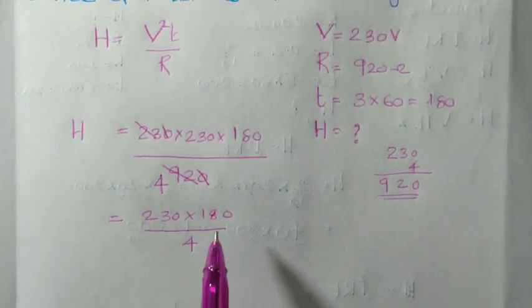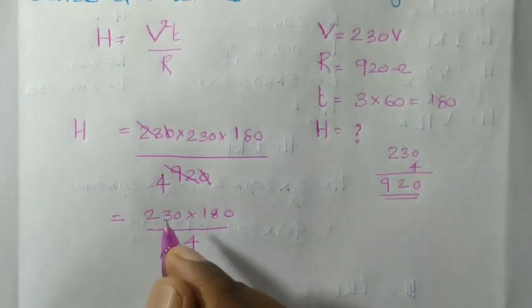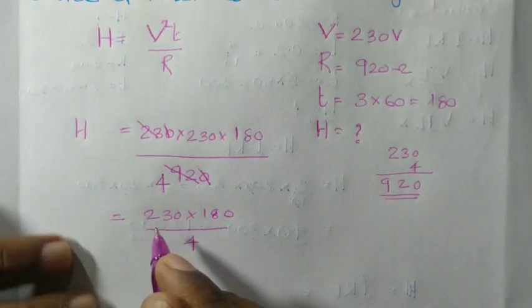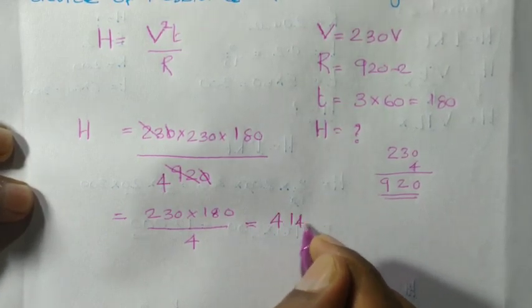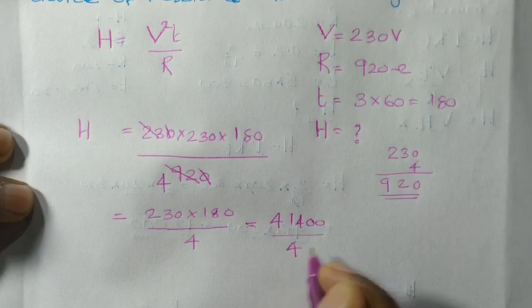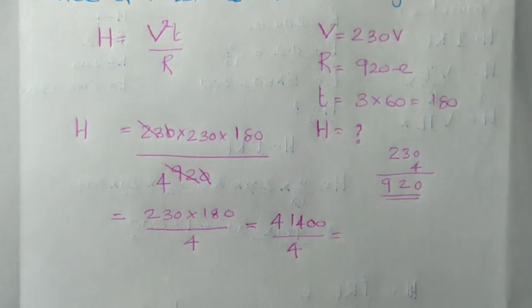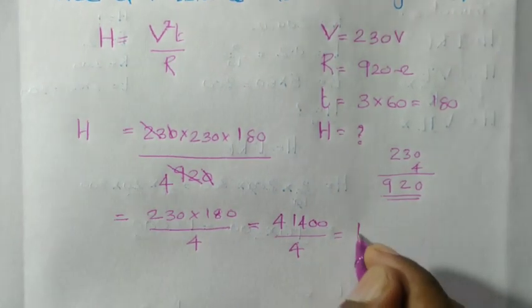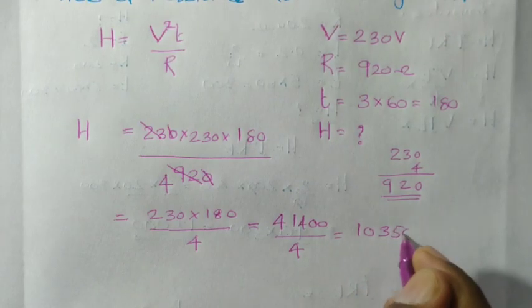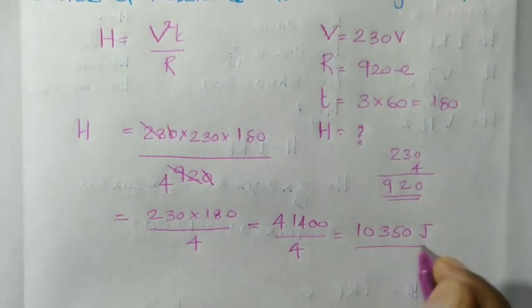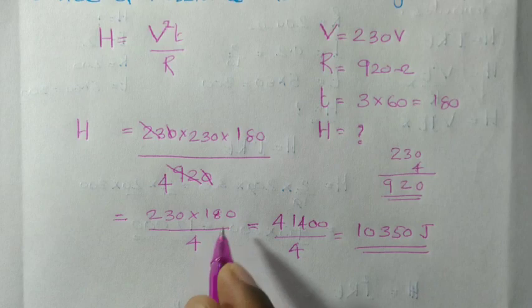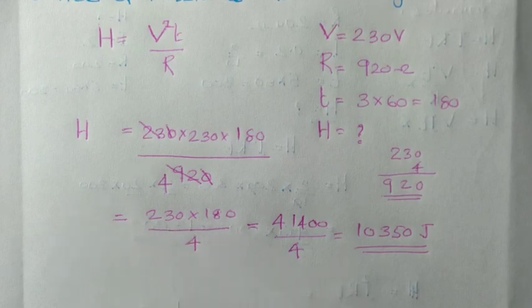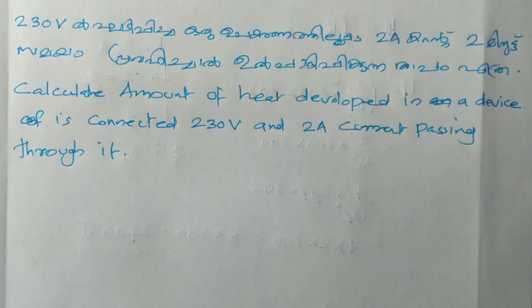We can divide this by 4. If you have the other step, we can divide this by 4. We will divide this by 3 and then by 5. The answer will be produced.